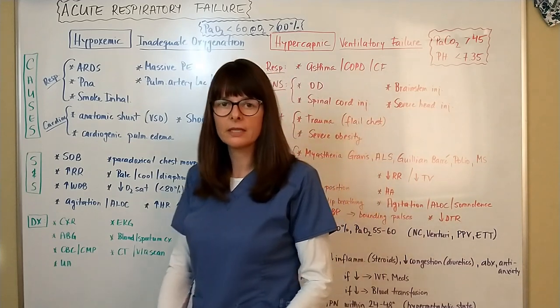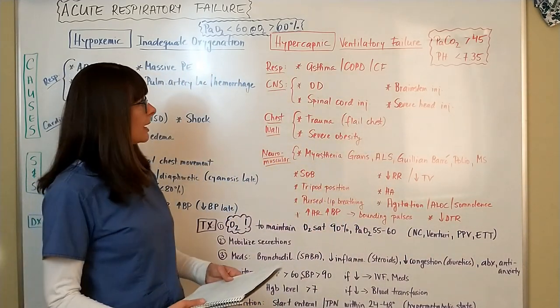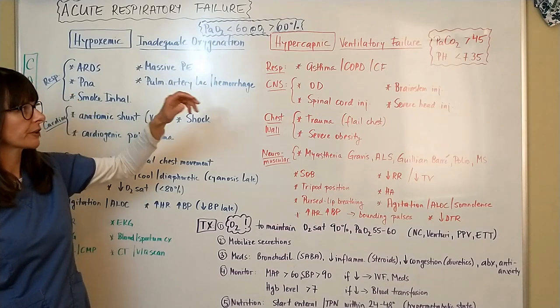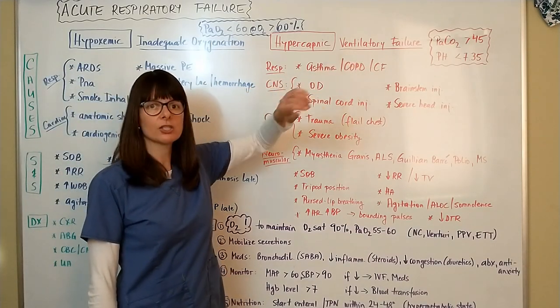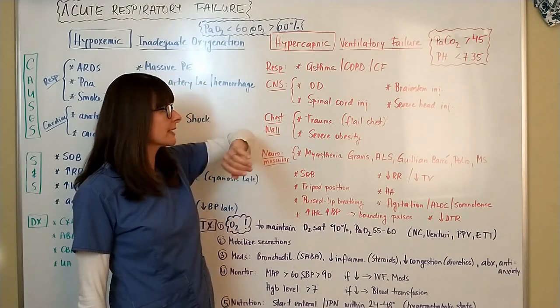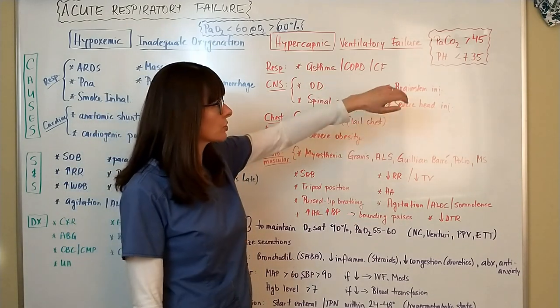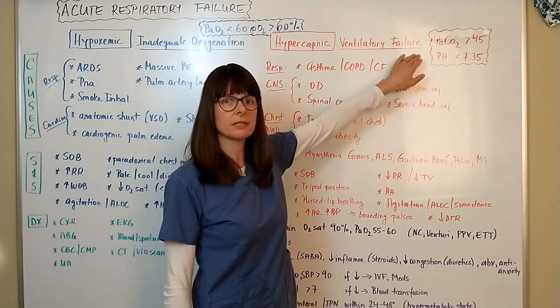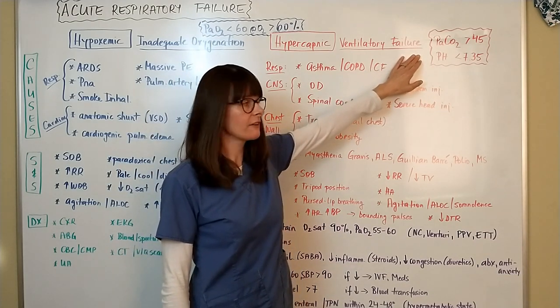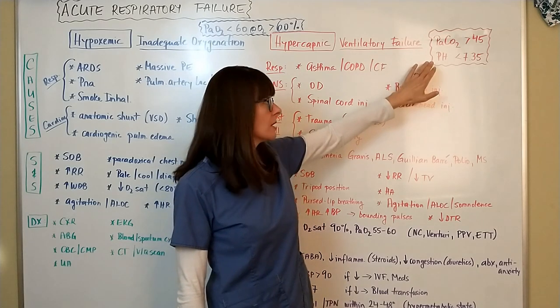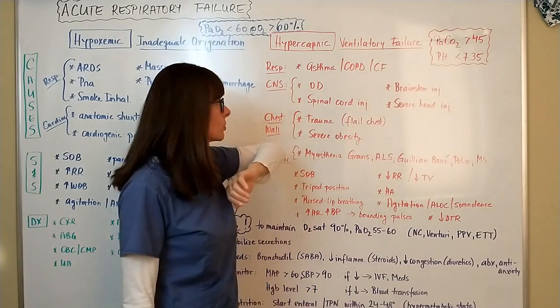Let's look at the counterpart, hypercapnic respiratory failure, which is mostly ventilatory failure. This can be evidenced by respiratory acidosis characterized by a PaCO2 greater than 45 and a pH less than 7.35, signs of respiratory acidosis.